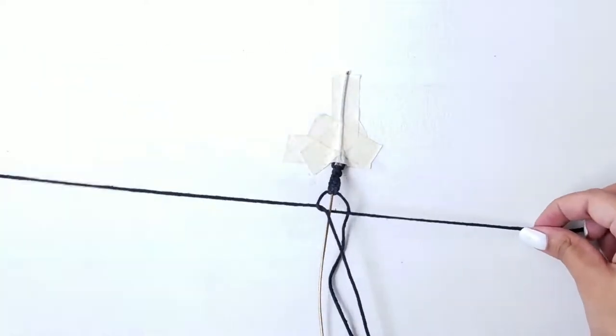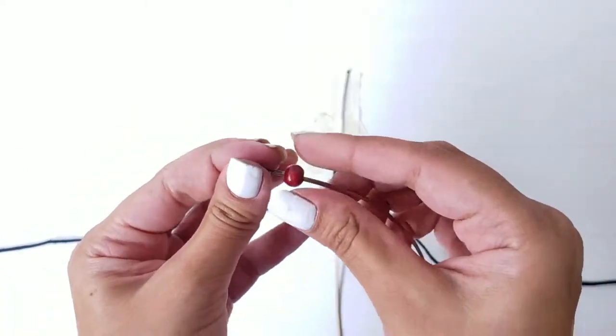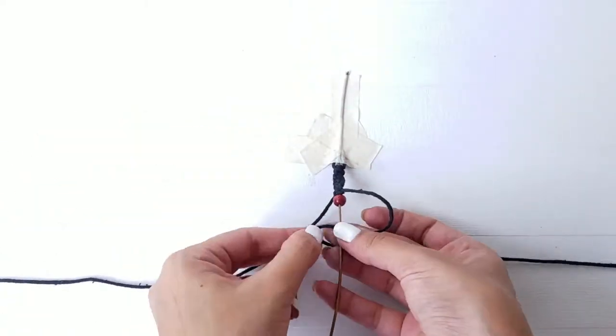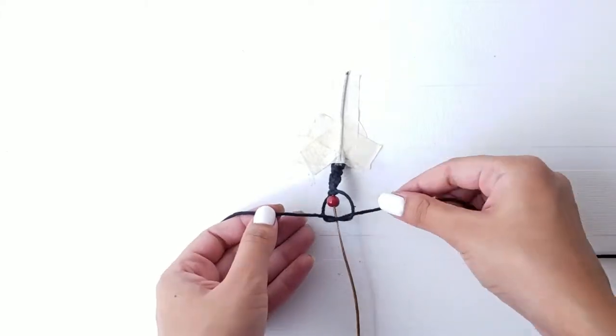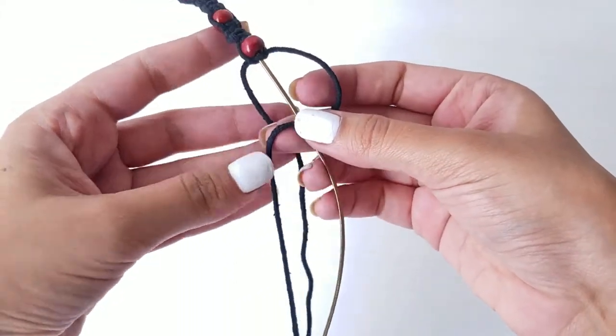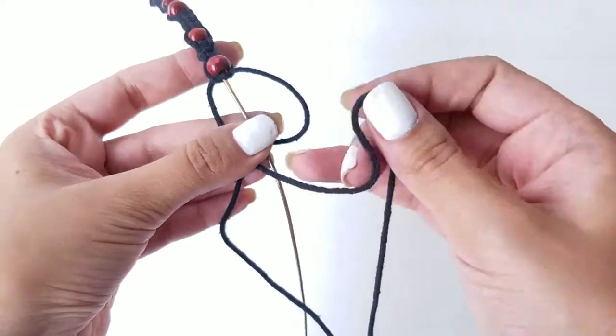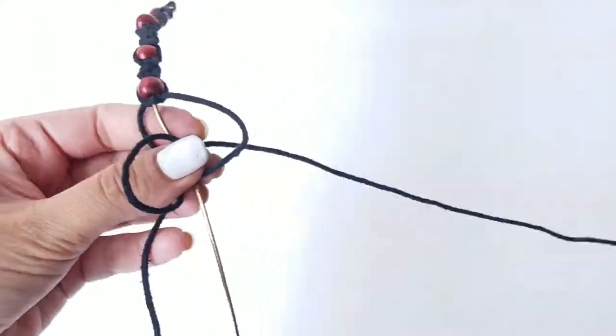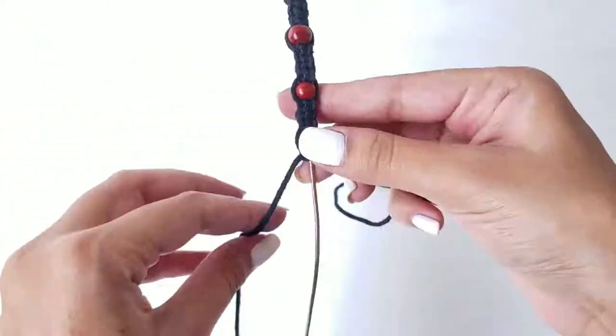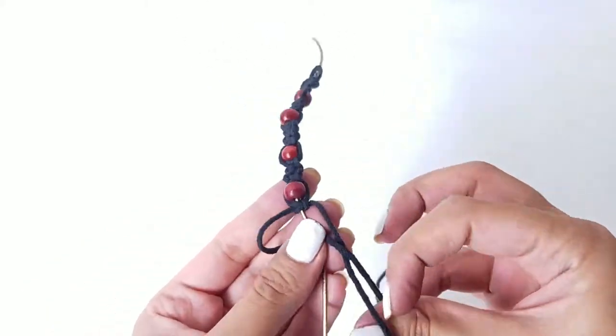Create ten knots and slip a bead through the center string. Once again, take the right one under the center and the left one through the loop. Repeat the same on the left side and keep alternating throughout the bracelet.